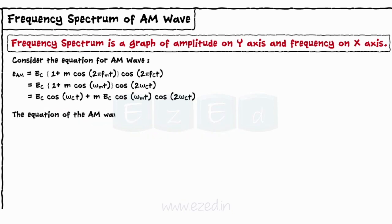The equation of the AM wave thus becomes EAM equals ECcosOmegaCT plus MEC by 2 into cosOmegaC plus OmegaMT plus MEC by 2 into cosOmegaC minus OmegaMT.